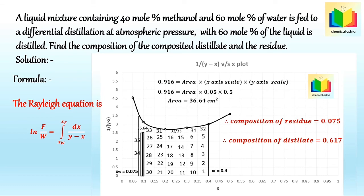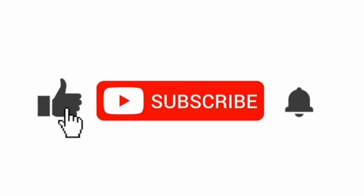In this way, we obtain the composition of the residue using the Rayleigh equation, and the composition of the distillate by material balance: Yd_average = 0.617. If you like this video, please press the like button, share it with your friends, and subscribe to the channel.